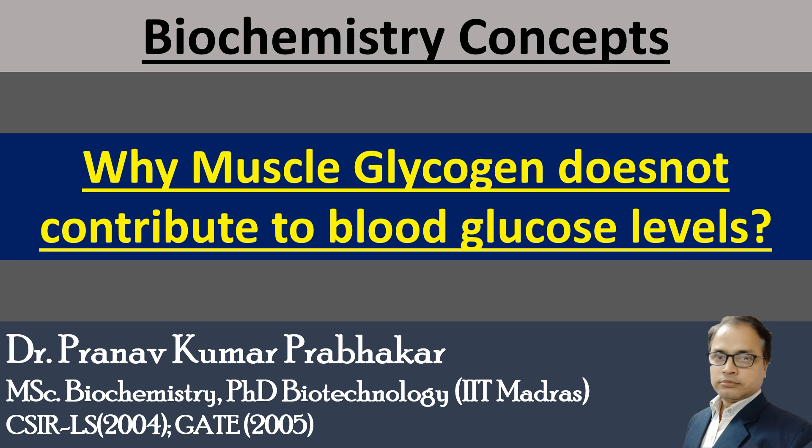Glycogen is a storage form of glucose which we normally store in the form of glycogen in the animal body. Glycogen is stored in two main organs — liver and muscle. Whenever we have a hypoglycemic condition or the body does not have sufficient glucose, glycogen is broken down and provides glucose to the blood circulation to bring glucose levels back to normal. However, this glucose comes only from the liver, not from the muscle — and that is the reality.